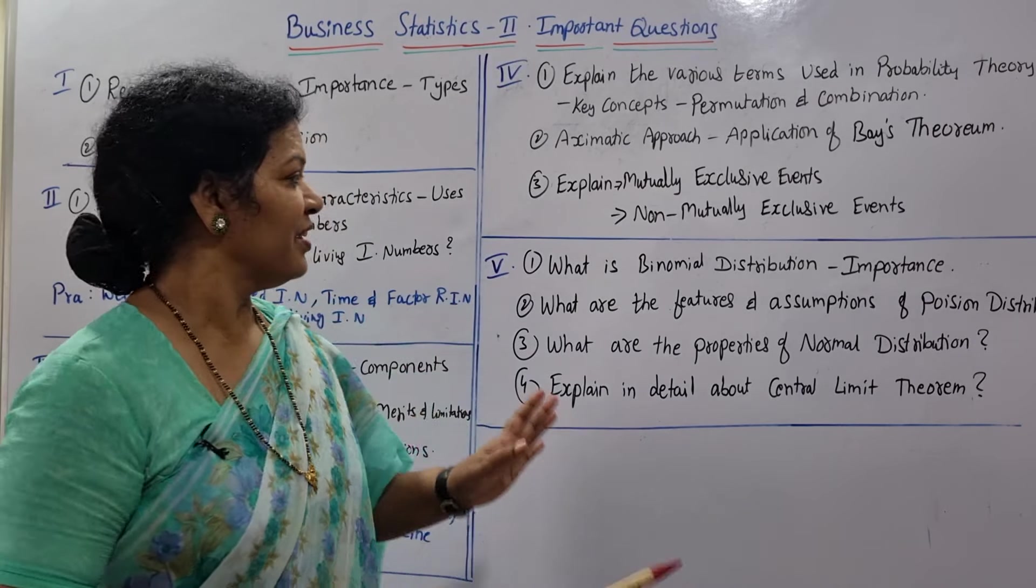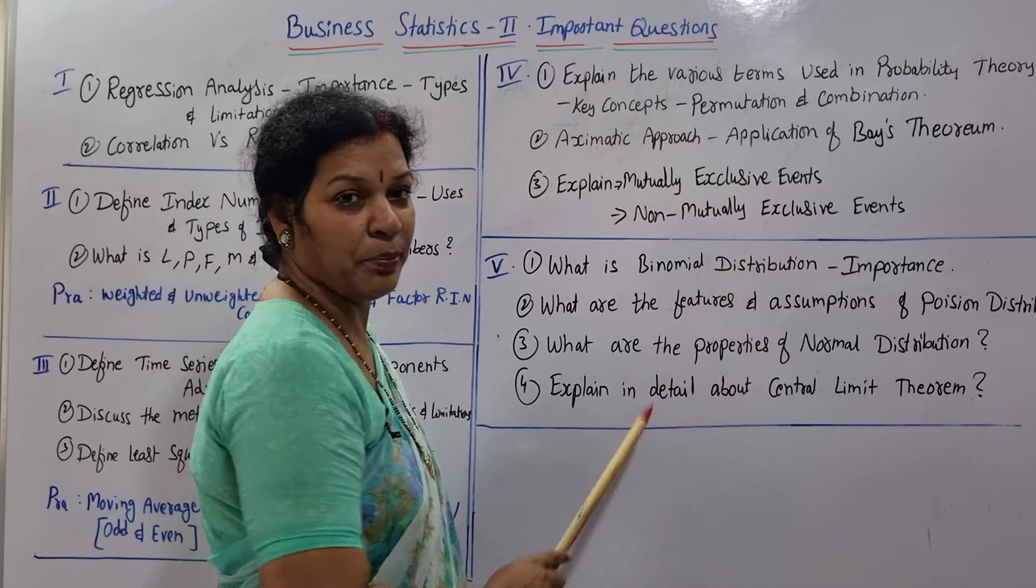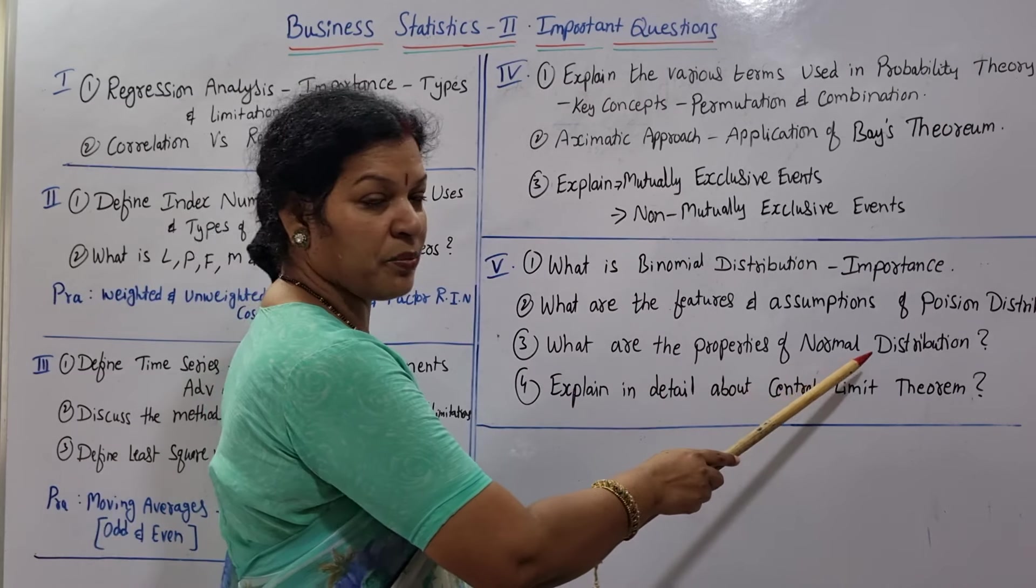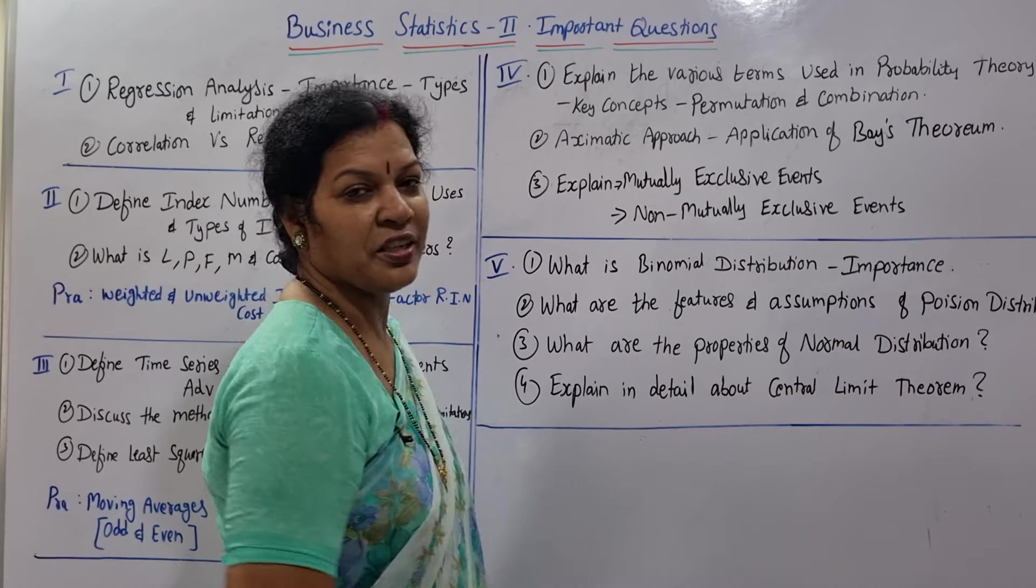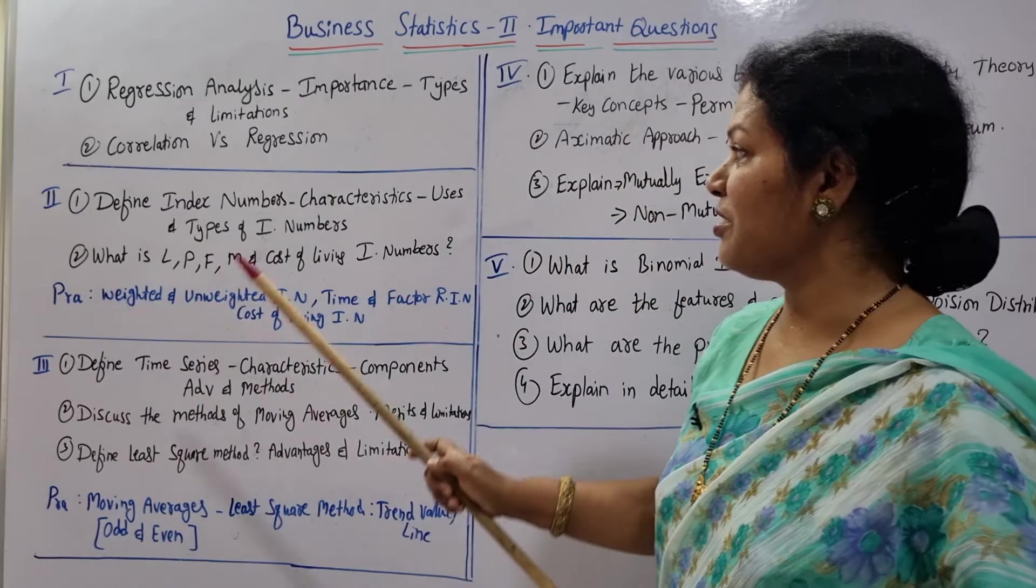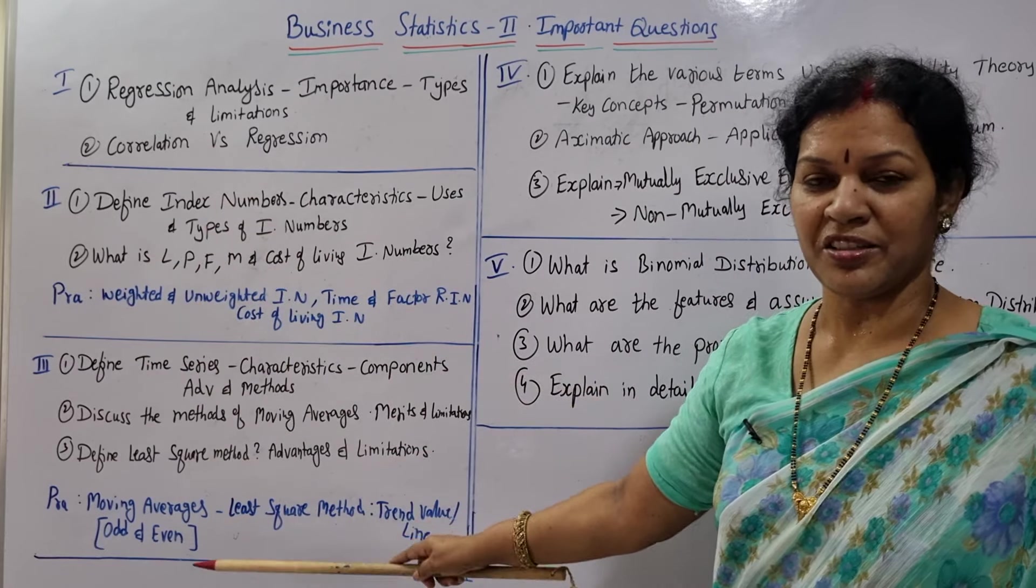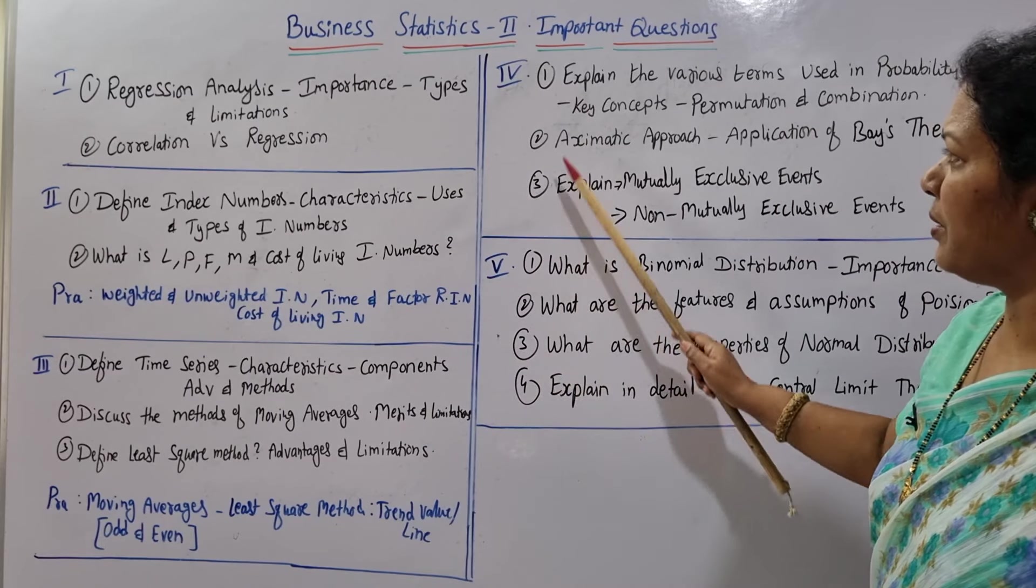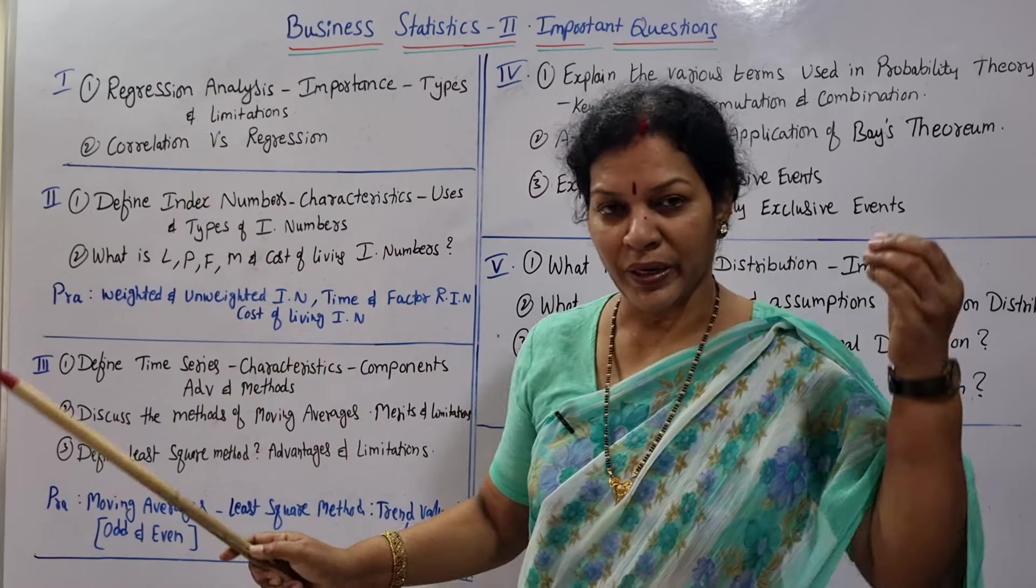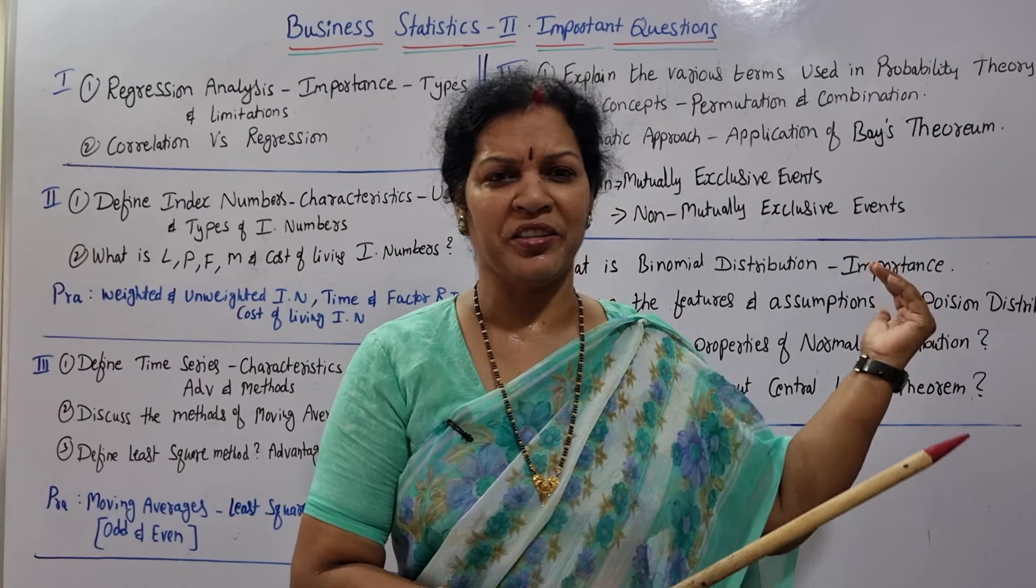Only three questions important for the examination for probability. And also practicals are there, whatever is possible and easy you can just learn. Now coming to the last unit, I have prepared only four questions. First one: what is binomial distribution and importance. Second: what are the features and assumptions of Poisson distribution. Third: what are the properties of normal distribution. And explain in detail about the central limit theorem. Only four questions - units four and five are mathematics and statistics point of view. Seven plus seven, only 14 questions are given to you, but don't worry about the examinations. These three are quite easy. In mathematics, let us see, I don't have much idea. If you have some idea you can just prepare this one also.